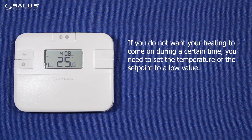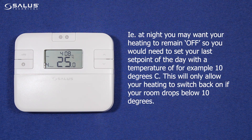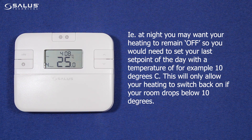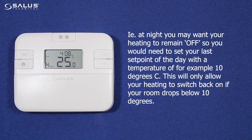If you do not want your heating to come on during a certain time, you need to set the temperature of the set point to a low value. For example, at night you may want your heating to remain off, so you would need to set your last set point of the day with a temperature of, for example, 10 degrees. This will only allow your heating to switch back on if your room drops below 10 degrees.